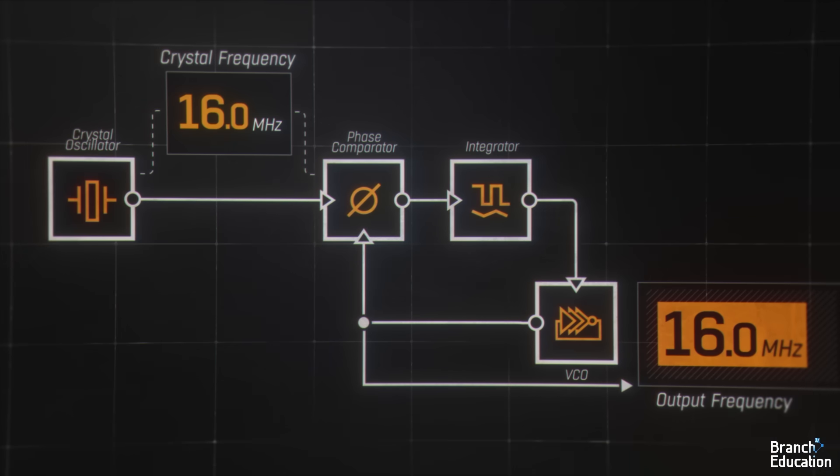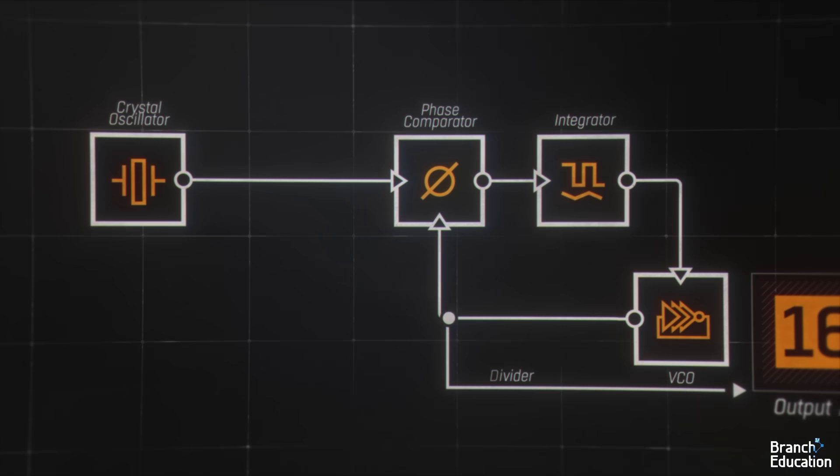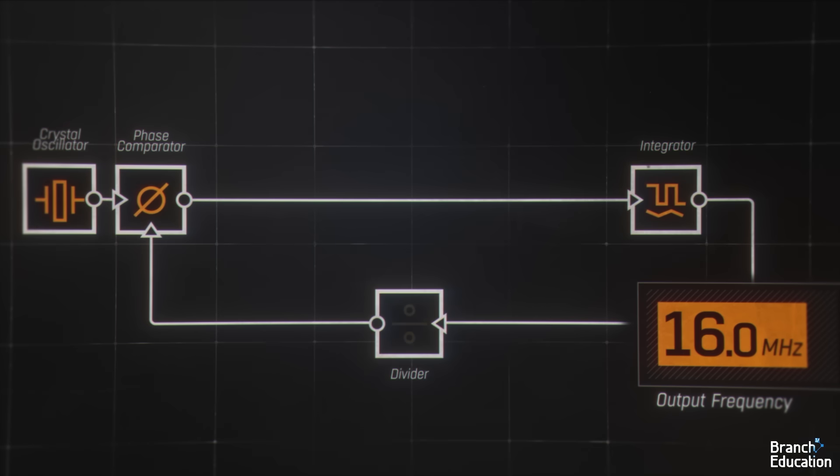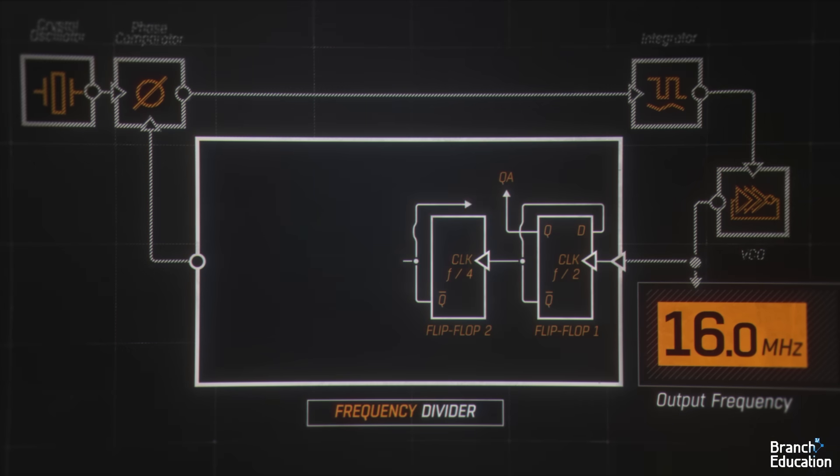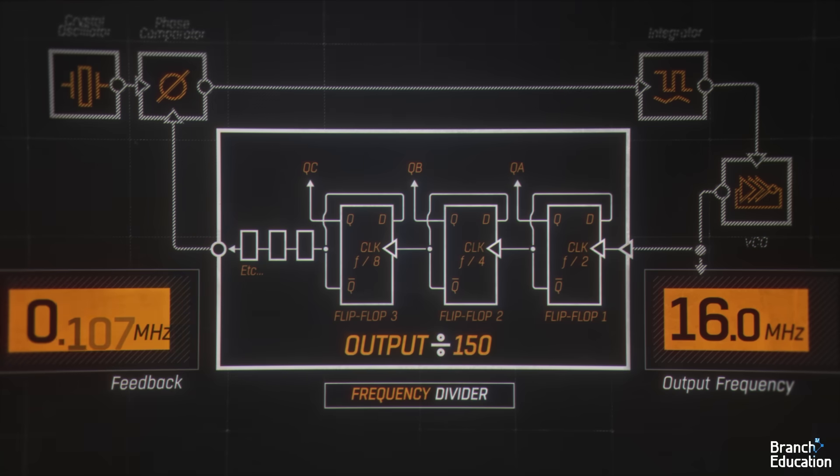However, since we want to get, for example, a 2.4 gigahertz signal, which is 150 times that of the 16 megahertz crystal oscillator, we add a frequency divider into the feedback loop. This frequency divider is just like the one in the wall clock that took 32,768 cycles per second and turned it into a 1 hertz signal. Rather, now, we're dividing by 150.